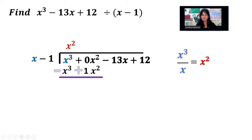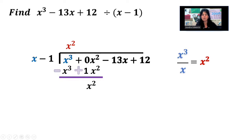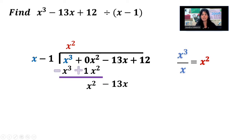Here we have a positive, so that'll turn into negative, and this negative into a positive. We're ready to combine. x cubed minus x cubed is nothing — you don't ever want to write what you don't have, only what you do have. Then 0x squared plus 1x squared is x squared. Drop it down here. We're going to take this negative 13x, bring that down, and then we start again.